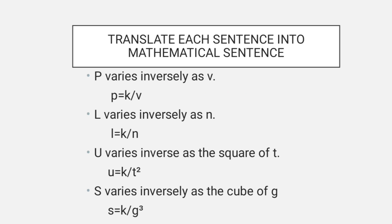Translate each sentence into a mathematical sentence. P varies inversely as V: P equals K over V. L varies inversely as N: L equals K over N. U varies inversely as the square of T: U equals K over T squared. S varies inversely as the cube of G: S equals K over G cubed.